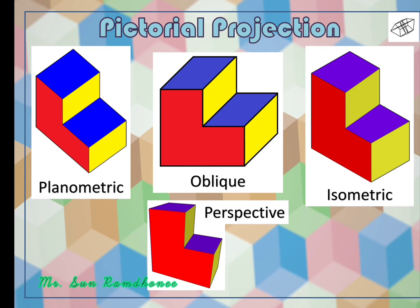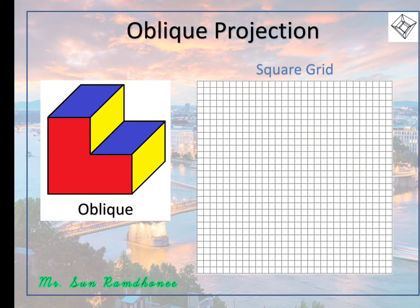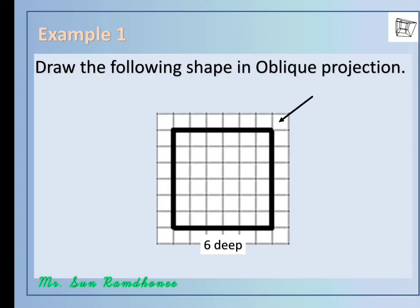In order to draw in oblique projection we will be needing the square grid. Do not confuse square grids with graph paper. Let's find out what information we have in this example. The first thing that we see is the front view, next we have the direction of depth, and then finally we have the depth of the object.